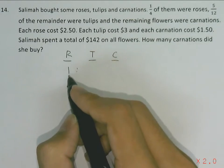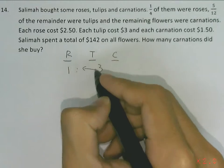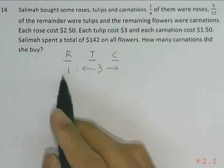So if this is one quarter and this is three quarters, then the ratio of roses to tulips and carnations in total will be 1 to 3.